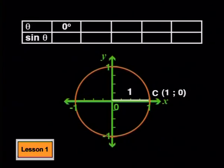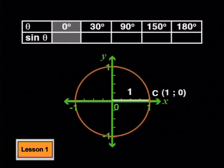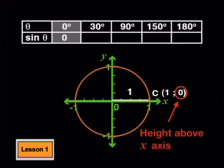I'm going to choose 0, 30, 90, 150 and 180 degrees and see what the value of sin theta is for each. Here goes. When theta is 0 degrees, the line lies on the x-axis. Sine of theta will be 0. You could also see this as a height of 0 above the x-axis.